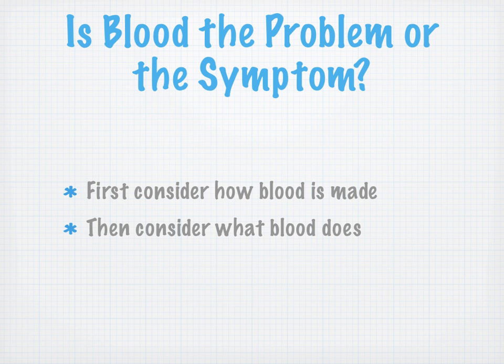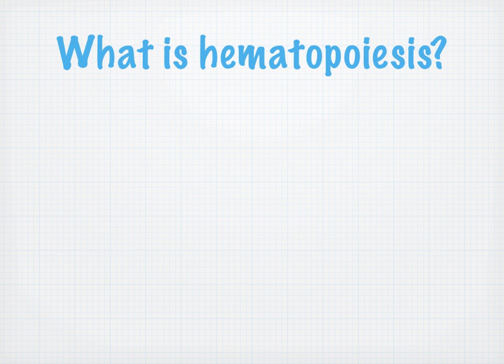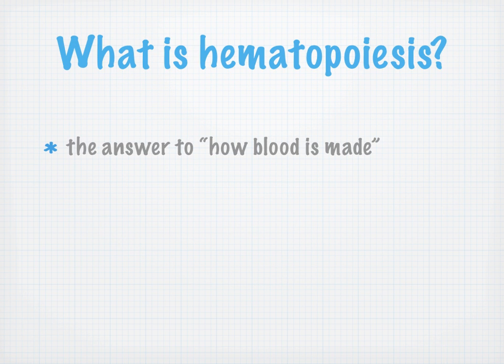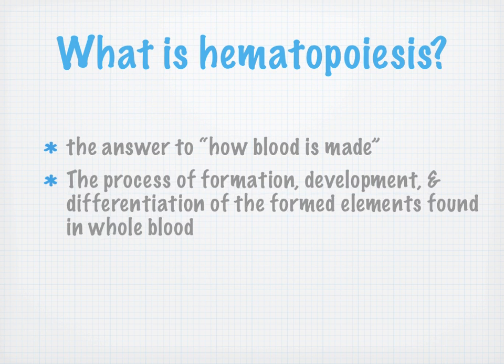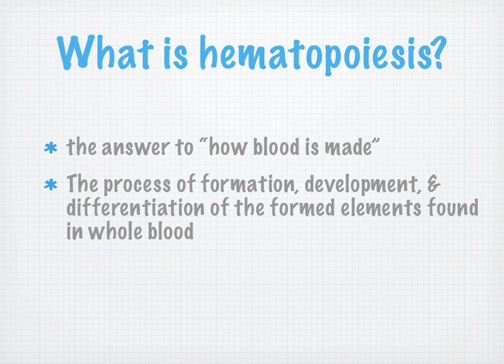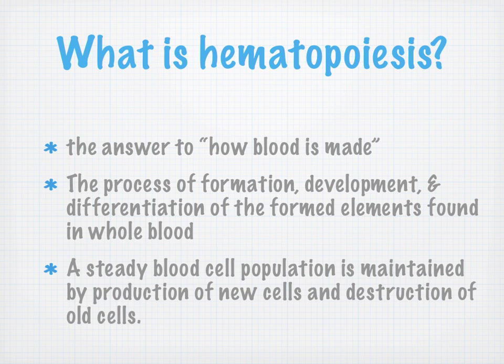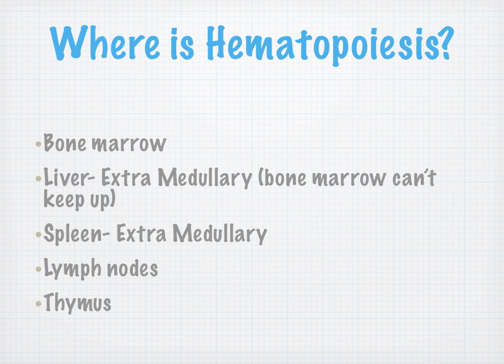So, is blood the problem or the symptom? To answer that question, we have to first consider how blood is made, and then consider what blood does. What is hematopoiesis? That's the process of formation, development, and differentiation of the formed elements found in whole blood. A steady blood cell population is maintained by producing new cells, and if we produce new cells, we have to destroy the old ones.